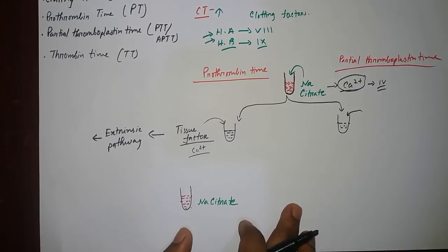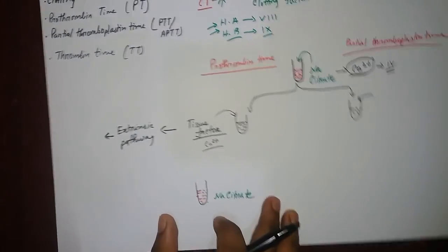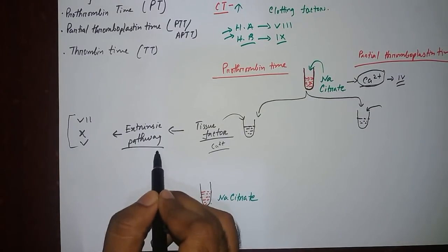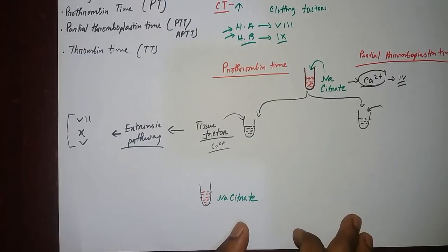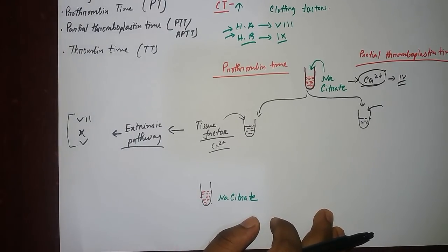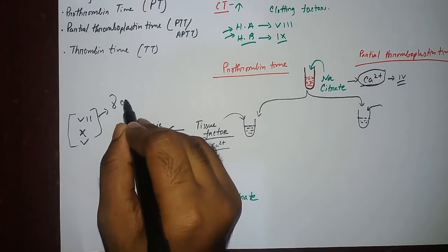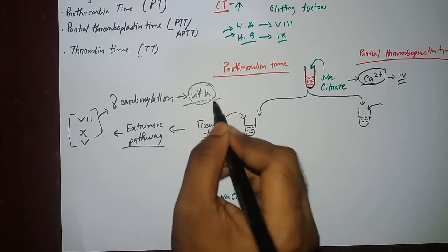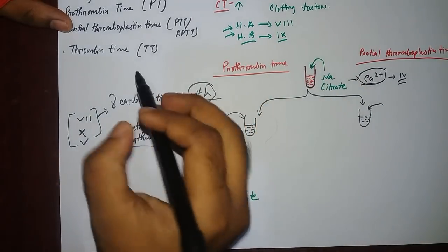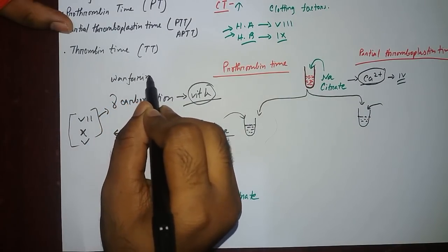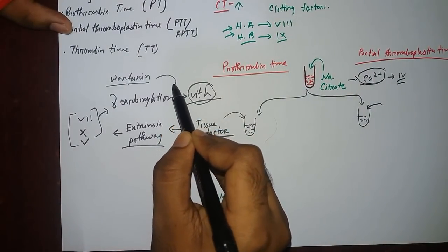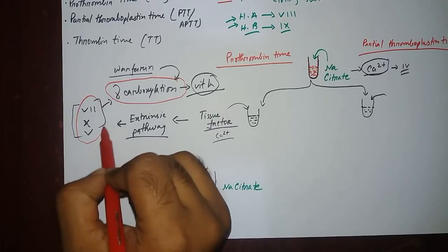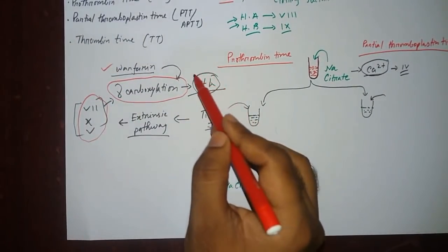If we have any problem in the extrinsic pathway, then the prothrombin time will increase. The factors that can be absent include factor 7, factor 10, and factor 5. These factors need gamma-carboxylation, which is dependent on vitamin K. So if you have vitamin K deficiency, your prothrombin time will be increased. Similarly, warfarin therapy causes no gamma-carboxylation of factors 7, 10, and 5, so in warfarin therapy and in vitamin K deficiency, your prothrombin time will be increased.